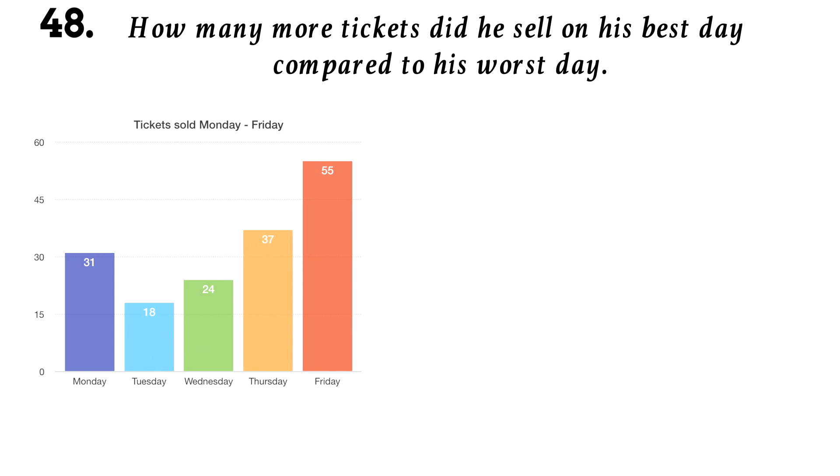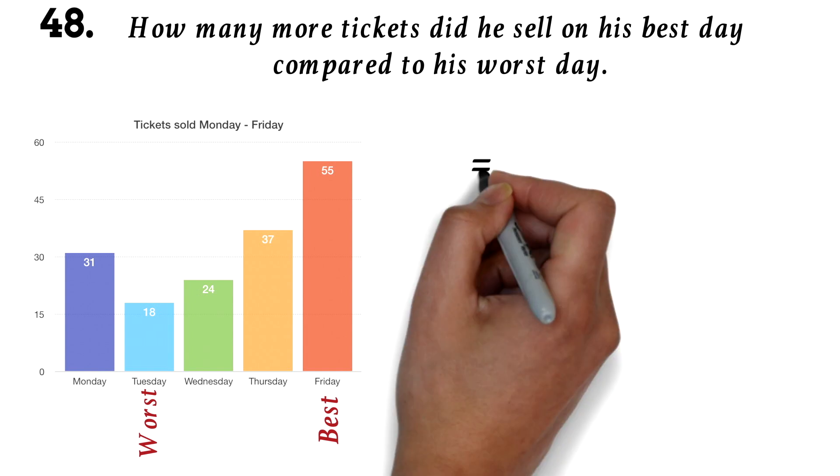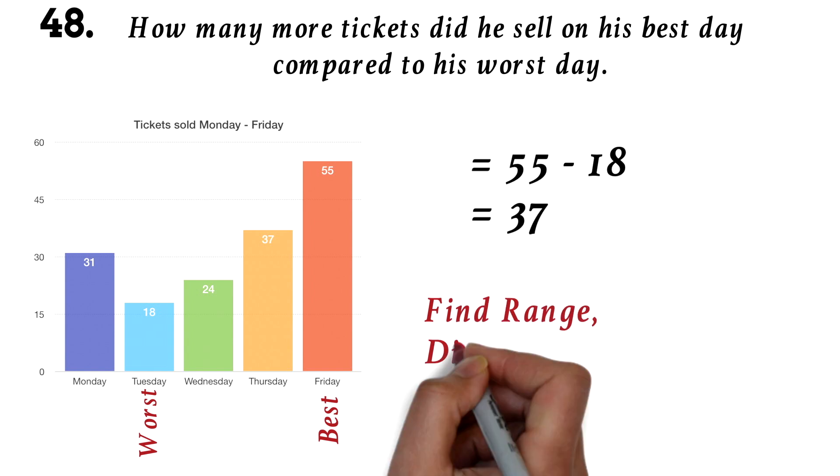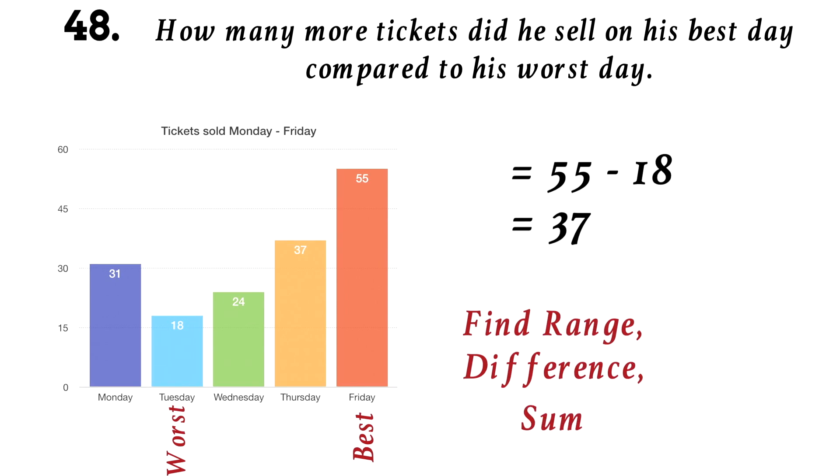Here we are still using the same chart. This is a simple difference question. His best ticket sales were 55 on Friday and his worst sale was 18 on Tuesday. If you subtract the two, you will get 37 as the answer. The second common kind of chart questions are questions about range, difference, and sum. Again, we will look at more in subsequent videos.